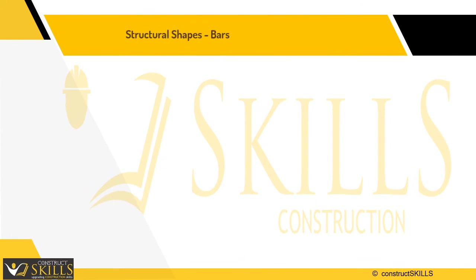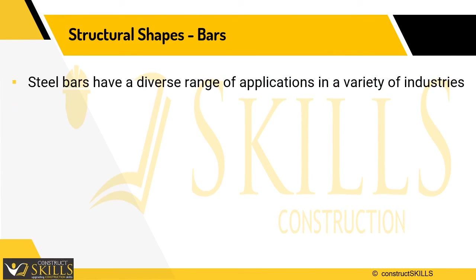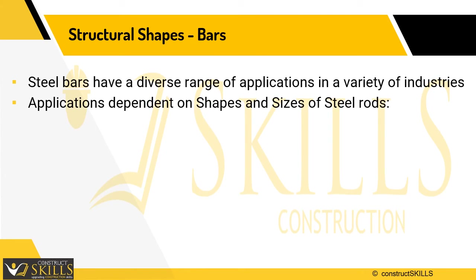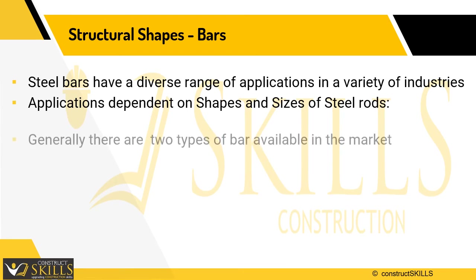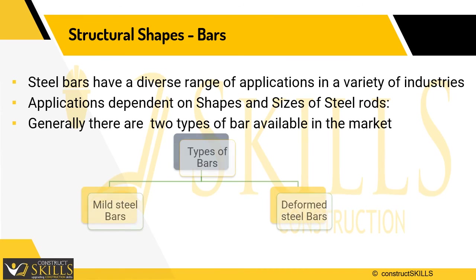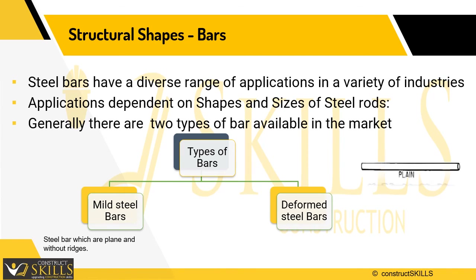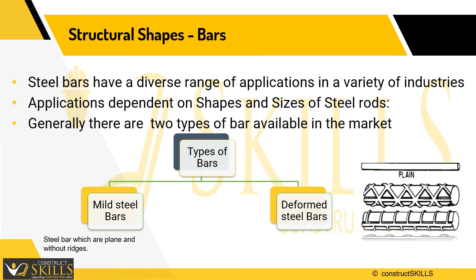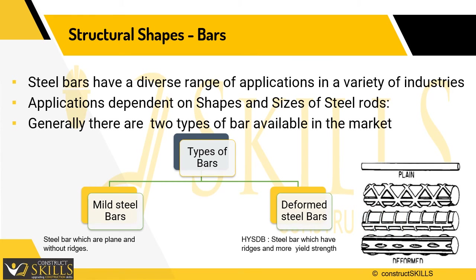Rods, also called bars, have a diverse range of applications across industries depending on their shape and size. They are categorized into two types: mild steel bars and deformed steel bars. Mild steel bars have a plain surface without ridges, are round in section, have diameters from 6 to 50 mm, and are used for inserts, lugs, and dowels. Deformed bars are called TMT bars and are used for providing reinforcement in RCC structures.